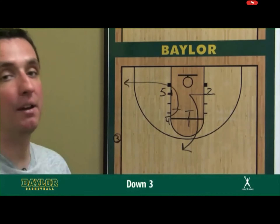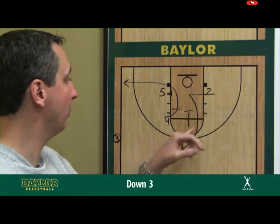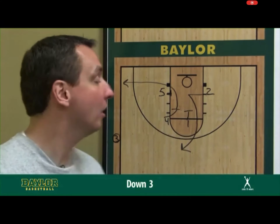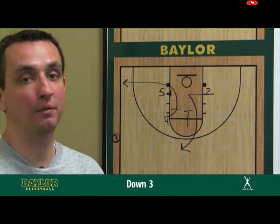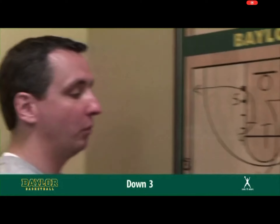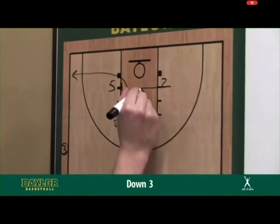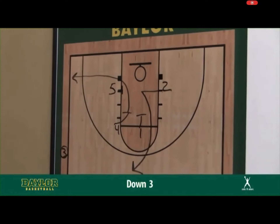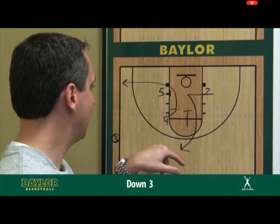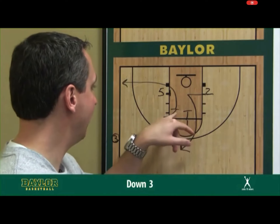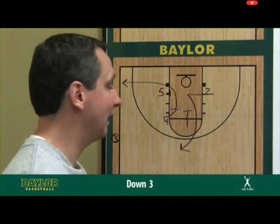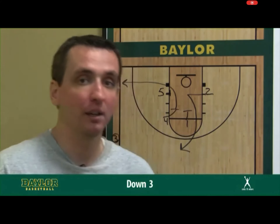You may have four guards in — your three, your one, your two, and your four, maybe your fourth guard — or a four who's more of a face-up, point-forward who can shoot the three. We're down three with 36 seconds; we'd like to get a good clean look at a high-percentage three: the two coming off the double first, then rubbing the four off the five's baseline screen for the three.